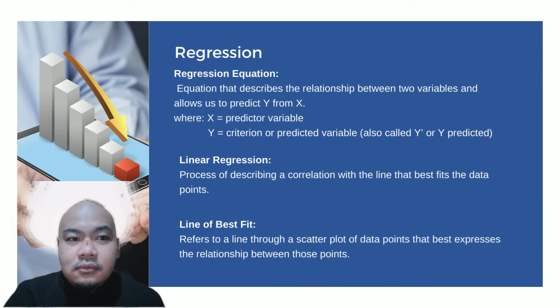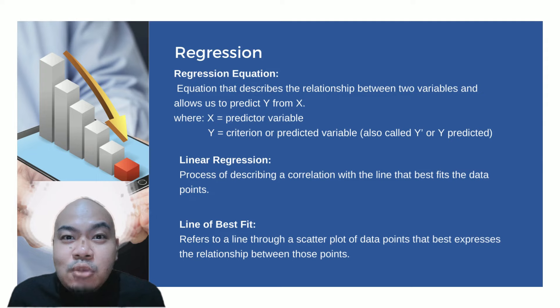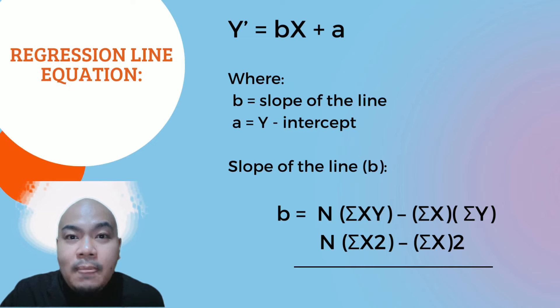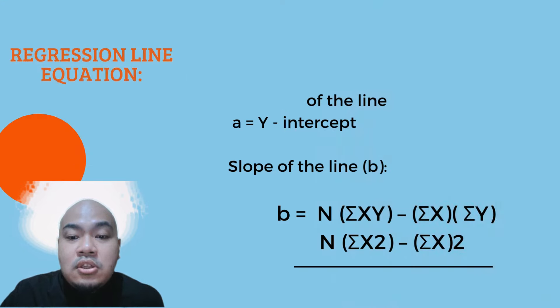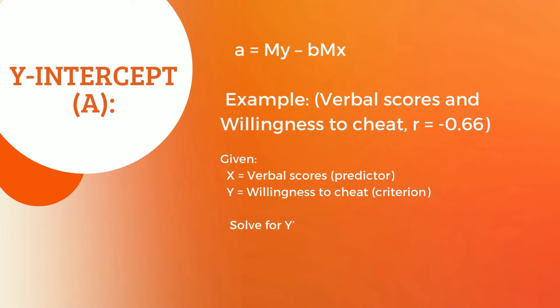The regression line equation is: Y′ = bX + a, where b is the slope of the line and a is the Y-intercept. The formula for slope b is: b = [n(ΣXY) − (ΣX)(ΣY)] ÷ [n(ΣX²) − (ΣX)²]. For the Y-intercept: a = M_Y − b × M_X. Using the given example with verbal scores and willingness to cheat data, where Pearson's R = negative 0.66, we proceed to solve for Y-prime.